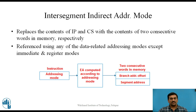The next addressing mode is intersegment indirect addressing mode. In this case the contents of the instruction pointer and code segment register are the contents of two consecutive words in memory. These memory locations are referenced using any of the data-related addressing modes except immediate and register modes. The instruction provides the addressing mode, and the effective addresses are computed accordingly. The branching address offset and segment address are the contents of two consecutive words in memory.